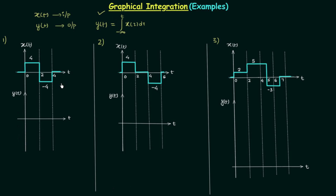Let's start the graphical integration for case number one. The final value of integration is the total area. In this case the total area is zero, because the area of the first rectangle is 4 multiplied by 2 which equals 8, and the area of the second rectangle is minus 8. So total area equals 8 plus minus 8, which is zero, and our integration will continue with zero as its final value.